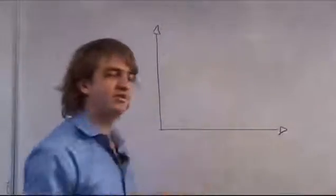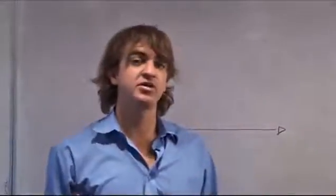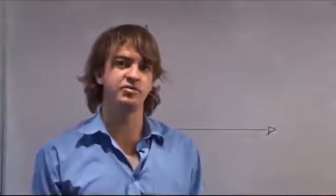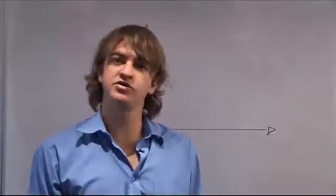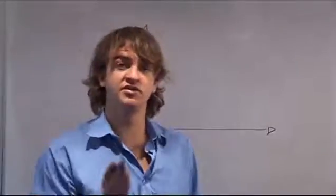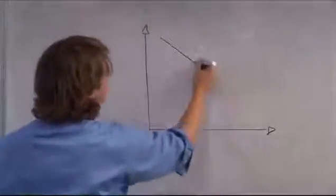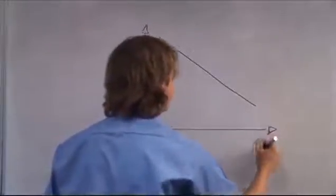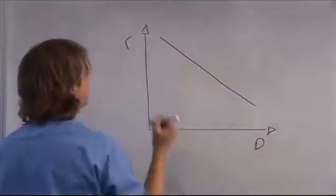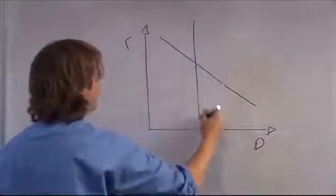Now what would the curve of the supply of money look like? Well, the supply of money is set by the Reserve Bank, so it's fixed. It's not going to be dependent on the interest rate, so it's a vertical line. So if we have our total demand for money in terms of the interest rate, our supply of money will be fixed.